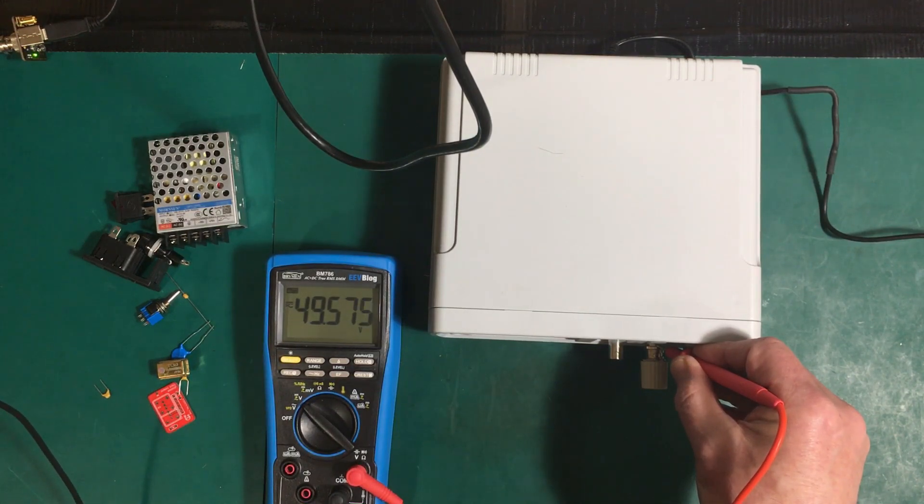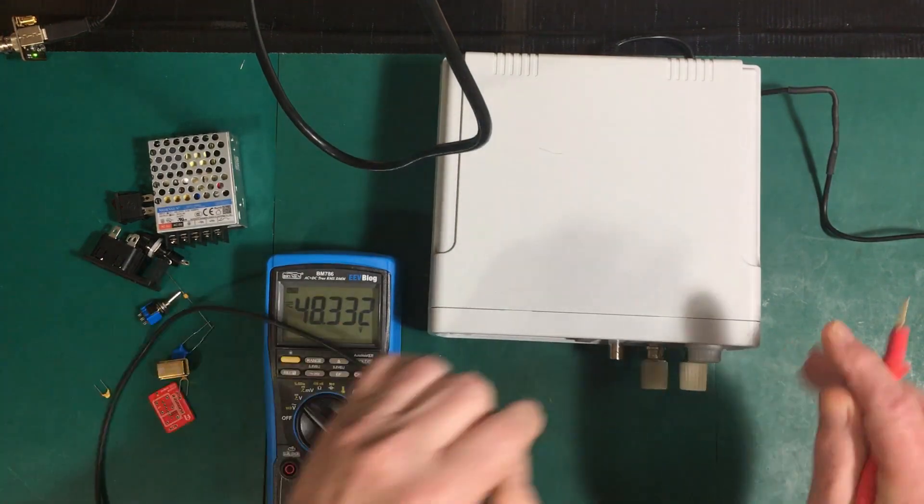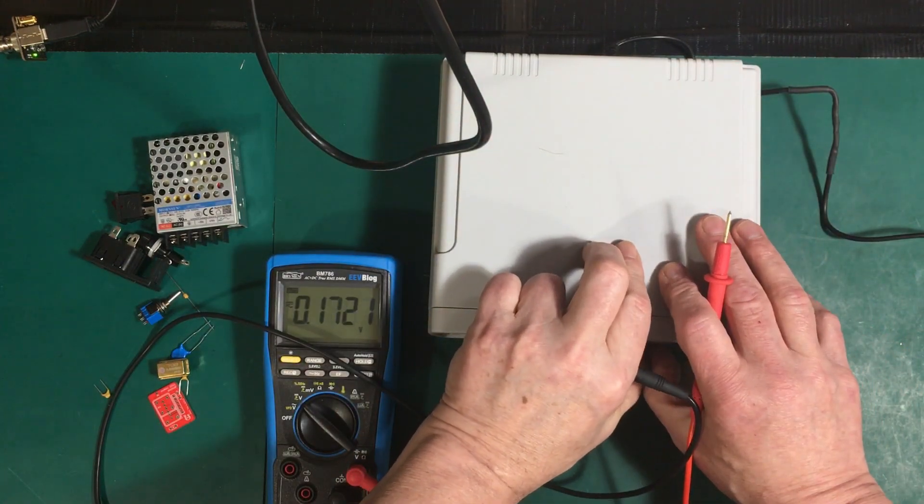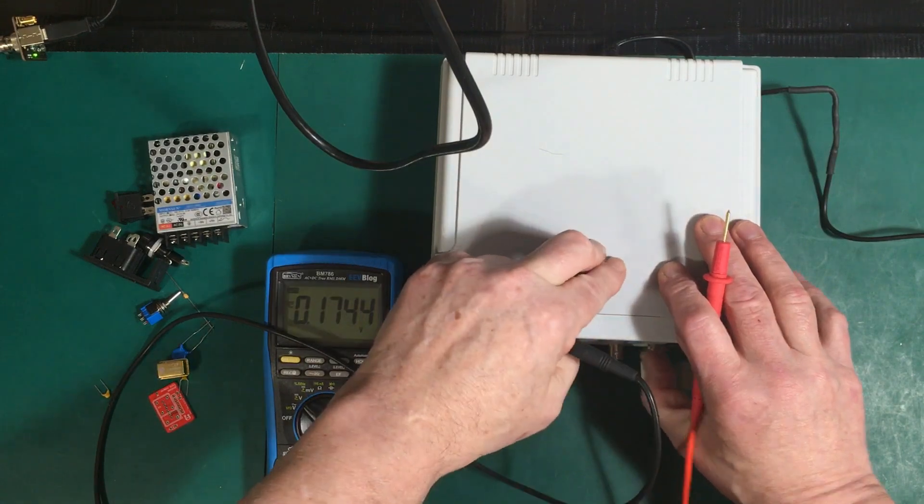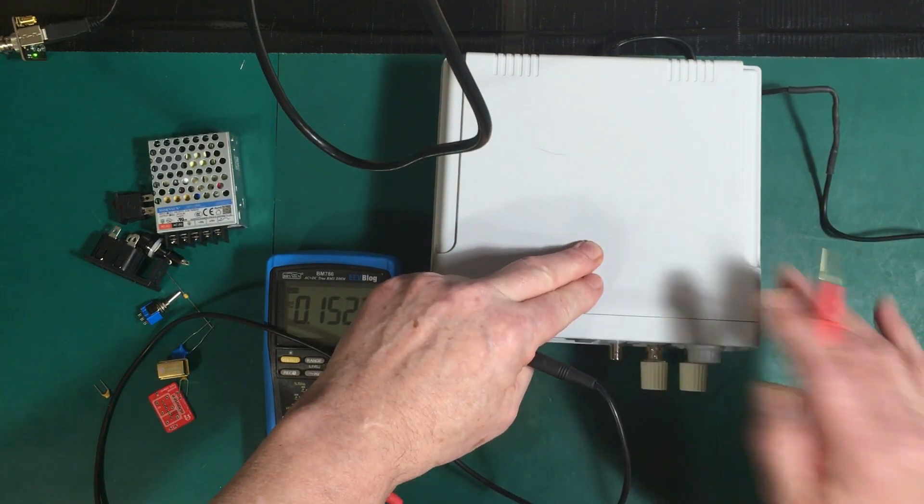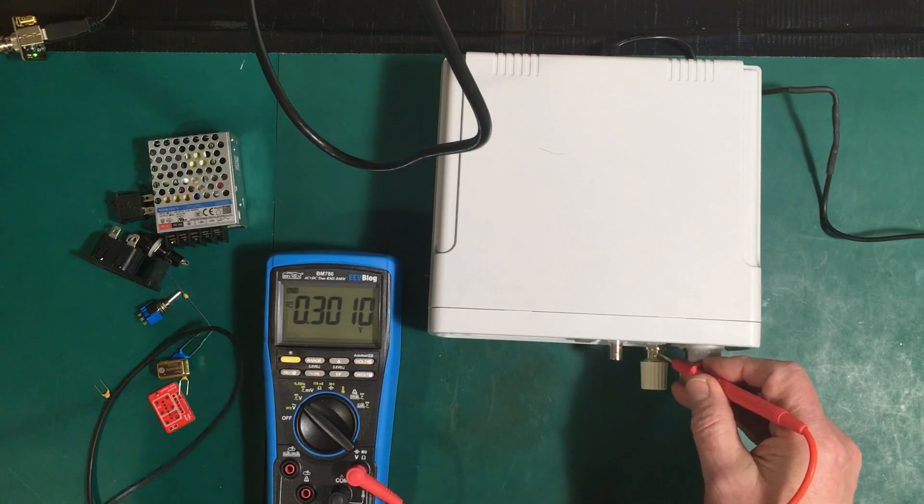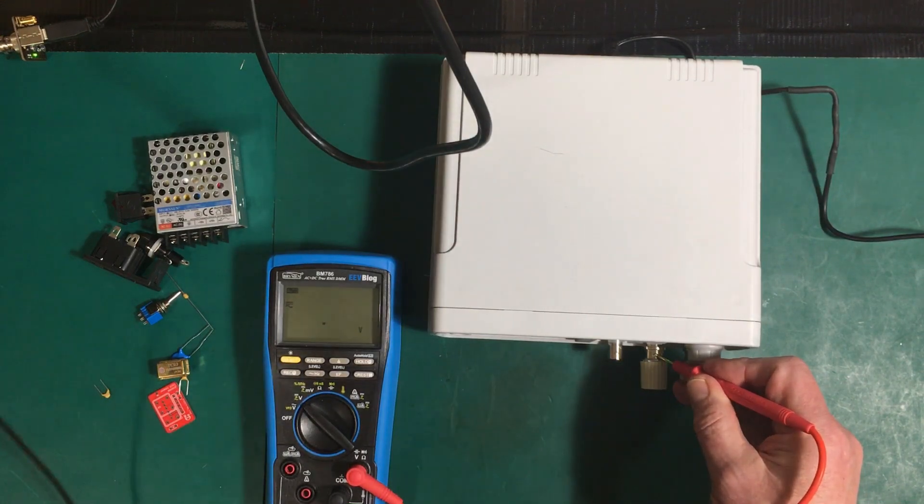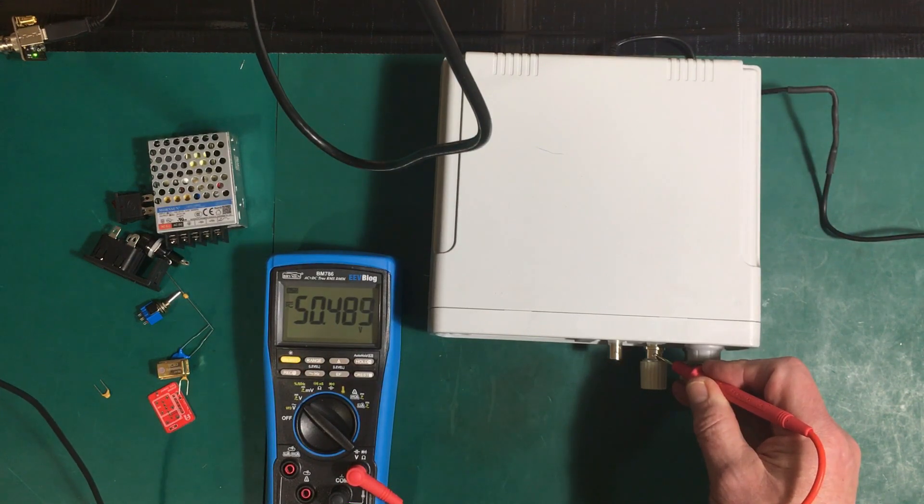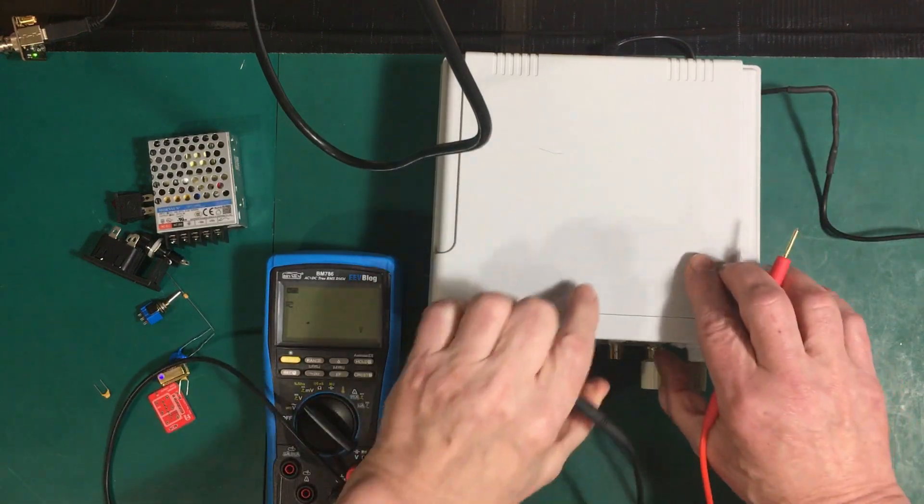I'm going to measure the leakage voltage between this unit and mains ground. We've got 49 volts there with the machine turned on but not loaded. The outputs are off. Let's put a full load on this thing and turn on both outputs running 20 volts peak-to-peak into 50 ohms square wave. Now it's up to 50 volts.